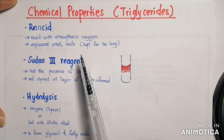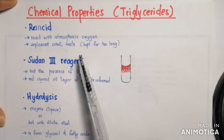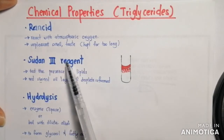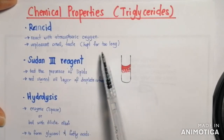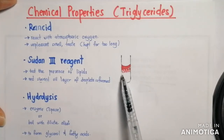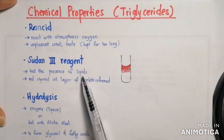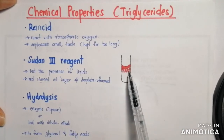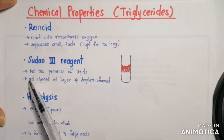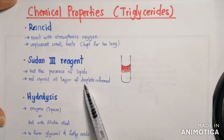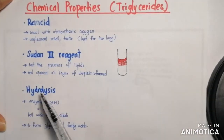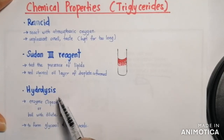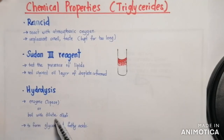To test the presence of lipids, we use Sudan III reagent. Sudan III will stain the lipid red — a red-stained oil layer or droplets will be formed if lipid is present. Hydrolysis of triglycerides to form glycerol and fatty acids requires an enzyme such as lipase, or we can boil it with dilute alkali.